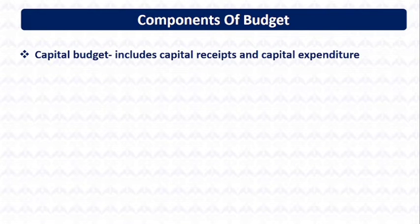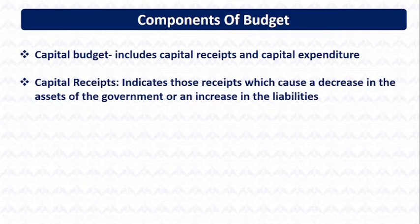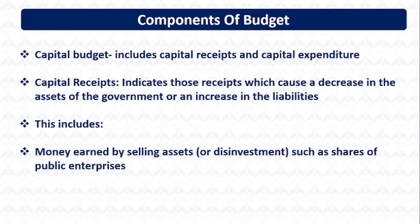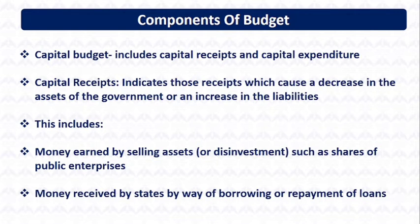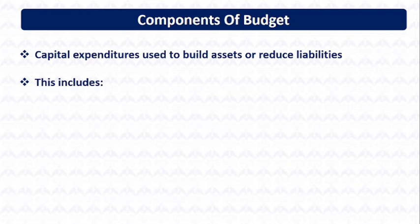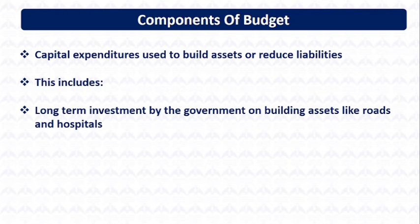Another important component is the Capital Budget, which includes capital receipts and capital expenditure. Capital receipts include those receipts which cause a decrease in assets of the government or an increase in its liabilities. It also includes money earned by selling assets or disinvestments, such as shares of public enterprises, and money received by states through borrowing or repayment of loans. Capital expenditure is used to build assets or reduce liabilities, and includes long-term investments by the government on building assets like roads and hospitals.